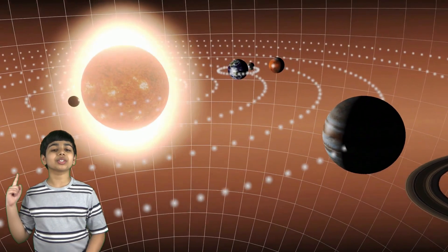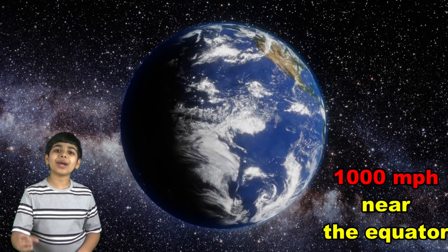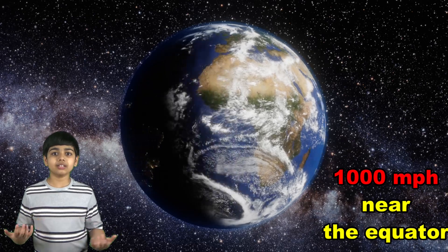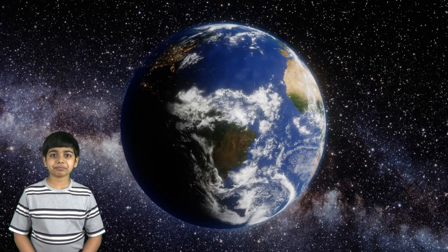To make one complete rotation in a day, Earth moves at a speed of about a thousand miles an hour at the point near the equator, and the speed would start to decrease as we move towards the poles.